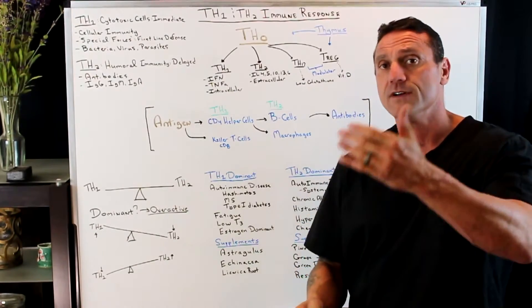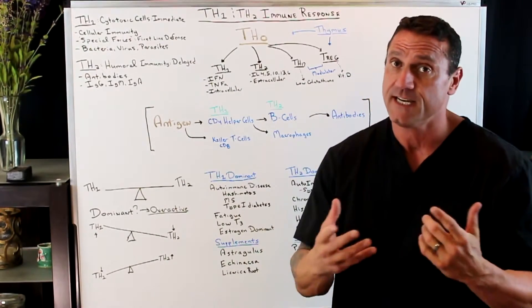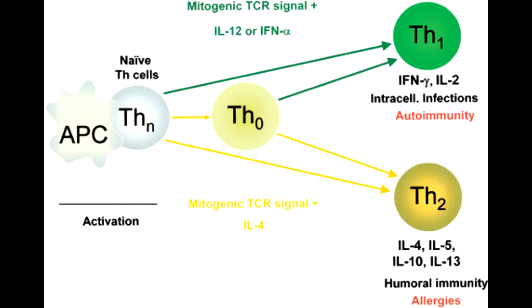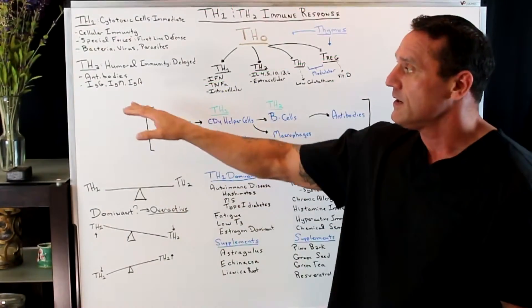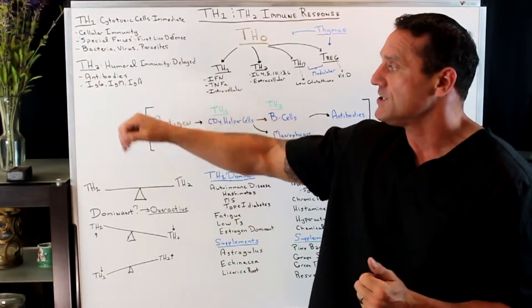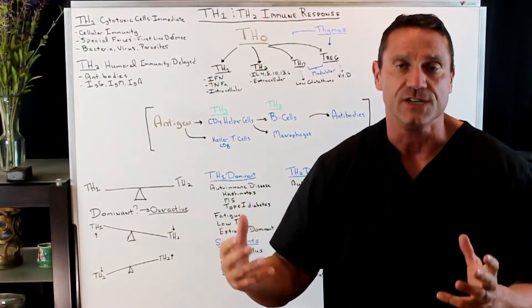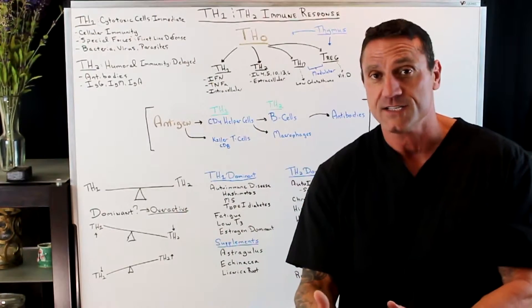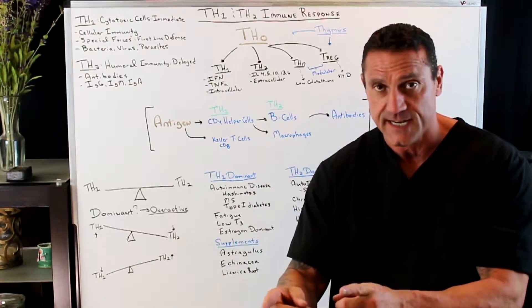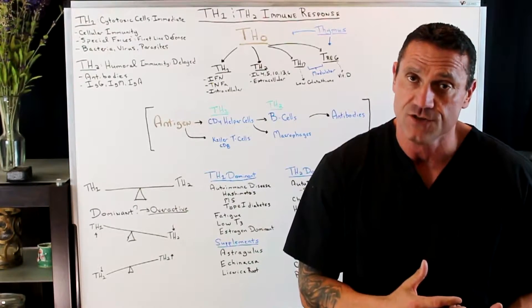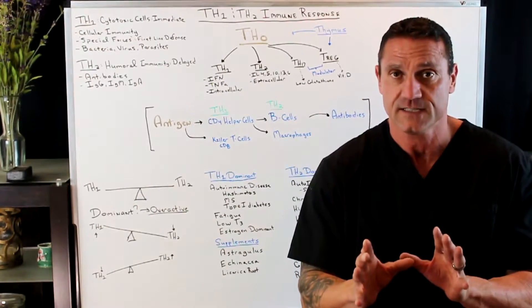Then we have the delayed response, which is the Th2 response — the humoral immunity. This is delayed; this is where the antibodies are produced, like IgG, IgM, IgA, and IgE. So this is like the second string. We need the first string of the Th1, and then we need the backup, which are the antibodies of the Th2.